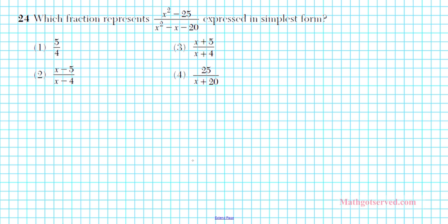Let's look at number 24. It says which fraction represents x squared minus 25 over x squared minus x minus 20, expressed in simplest form. So we're going to be applying two factorization processes to the simplification of this expression. The first one is the difference of squares. If you recall, a squared minus b squared can be factored into a minus b times a plus b. And to factor the denominator, we're going to factor by grouping.